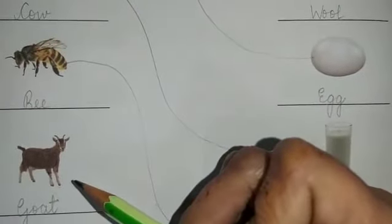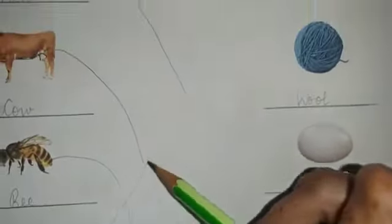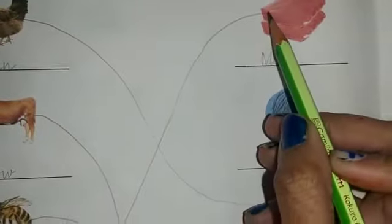Next is goat. What does goat give us? Goat gives us meat. And this is meat. So, we are going to match the picture of goat with the picture of meat.